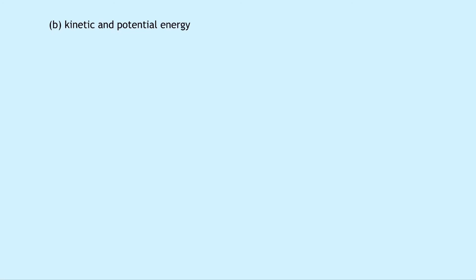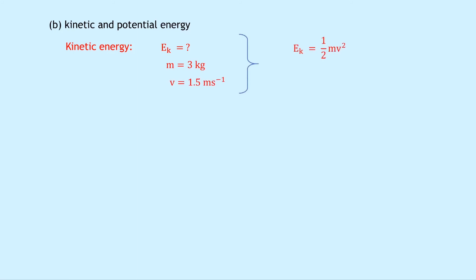Part B says to find the kinetic and potential energy. For kinetic energy, we know the mass is 3 kilograms and the speed v is 1.5 meters per second. Using EK equals a half mv squared, this equals a half times 3 times 1.5 squared, which gives an answer of 3.4 joules.